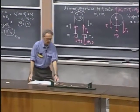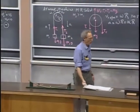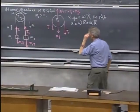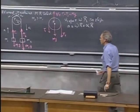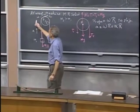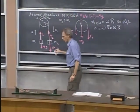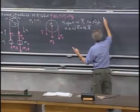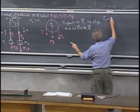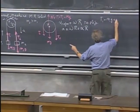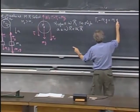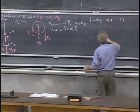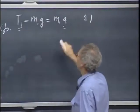Let's now start at object number one and write down Newton's second law. I call this the positive direction for object one, and this the positive direction for object two. So we get T1 minus m1 g equals m1 a. One equation. I don't know what T1 is, I don't know what a is.